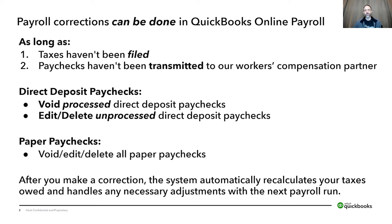There are different things you can do depending upon how the employees were paid. If the employees were paid by direct deposit, then you can void processed direct deposit paychecks, or you can edit and delete unprocessed direct deposit paychecks. If they're paid by paper checks, then you can void, edit, or delete the paper checks. Once a correction is done, the system will automatically recalculate your taxes owed and handle any adjustments in the next payroll run.